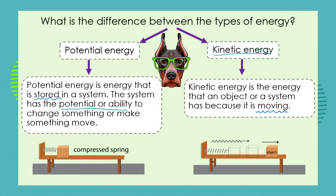We gave the example last time about a compressed spring that has potential energy. When we release the spring, it hits against the box and makes the box move. And while the box is moving, it has kinetic energy.